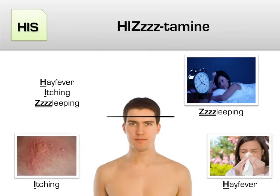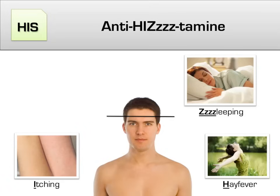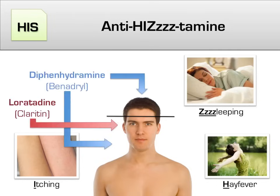When most people hear histamine, they think of allergies, not neurotransmitters. However, histamine is also a neurotransmitter. The upper brain — the cortex — depends upon a constant stream of histamine for activation, so once you cut off that supply, the cortex shuts down. We can remember the functions of histamine by thinking 'his-stamine': H for hay fever, I for itching, and Z for sleeping. Conversely, when we give something that blocks histamine, we'll see itching and hives disappear, hay fever put at bay, and the patient will get some sleep. First-generation antihistamines such as diphenhydramine or Benadryl work both peripherally and in the central nervous system, so they're used for sedation. Newer antihistamines such as loratadine or Claritin, however, only work peripherally, which is why they're advertised as non-drowsy.